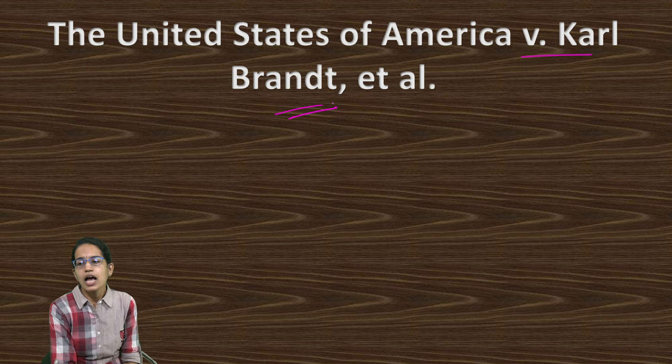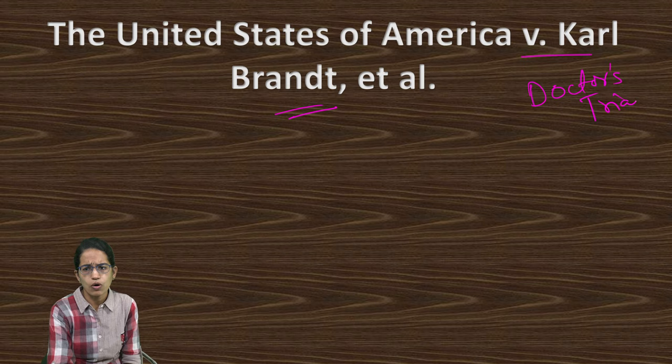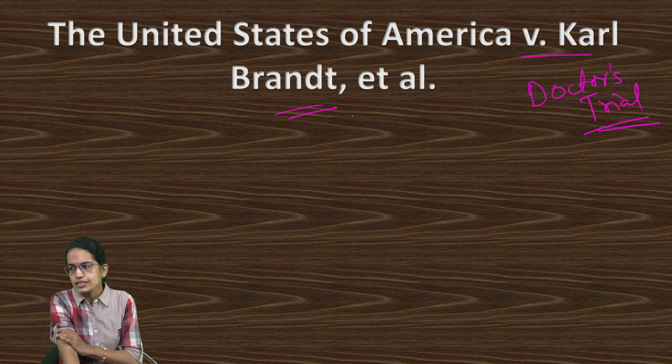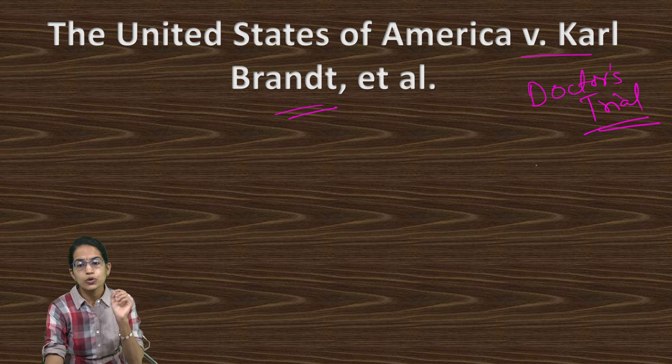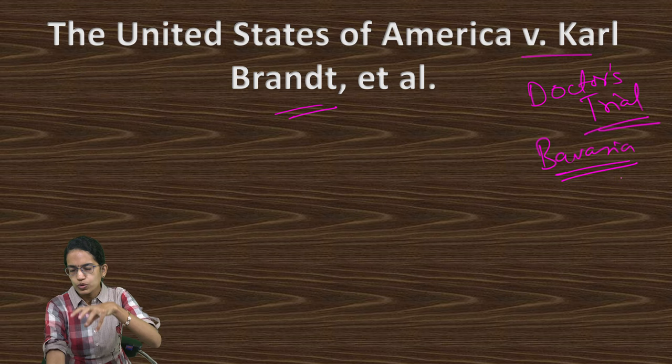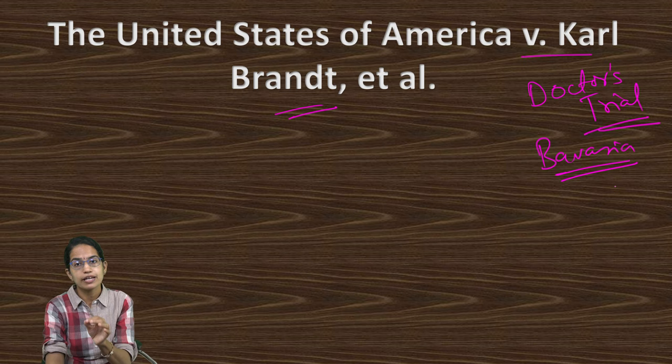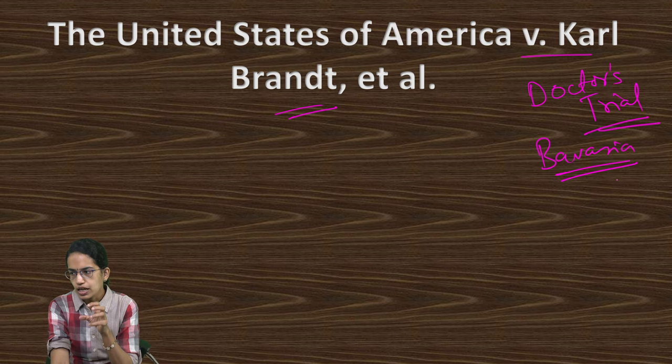The official document of this trial was named the USA versus Karl Brandt case. The case was conducted in a building in Nuremberg, in the region of Bavaria in Germany. This was one of the largest undamaged buildings that remained after World War II and the intensive bombing. Nuremberg was chosen symbolically because it was the birthplace of the Nazi party.